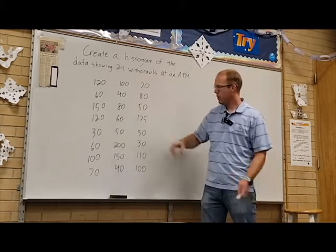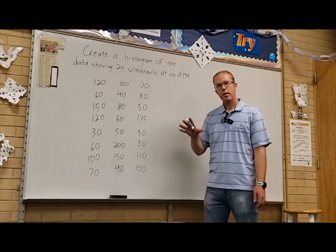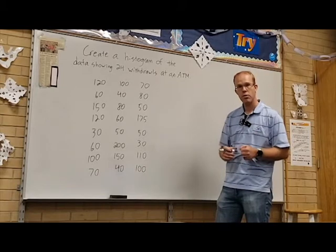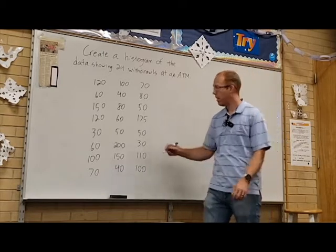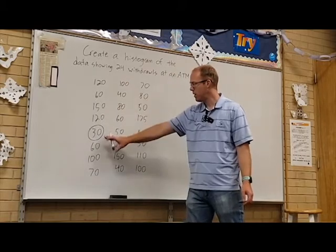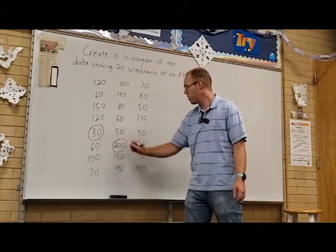Some are high, some are low. In order to break this down into a histogram, I need to figure out first what the minimum and maximum are so I can start to break that down into smaller intervals. We have our minimum here at 30, and our maximum is 200.